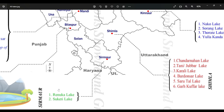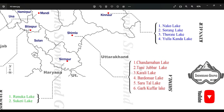Now let's see some lakes in District Sirmaur. The first one is Renuka Lake and the second one is Suketi Lake. In Shimla district, we have Chandarnahan Lake, Tani Jubbar, Karali Lake, Bardonsar Lake, Sarutal Lake, and Gadgufer Lake. Chandarnahan Lake is located around Chanshal Peak in Rohru. Tani Jubbar is located near Narkanda. Karali Lake is located in the Chota Shimla hillock. Bardonsar Lake is located between Dodra Kawar and Sangla. Sarutal Lake is around eight kilometers from Chanshal Top. Gadgufer Lake is located near Theog in District Shimla.